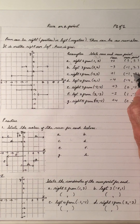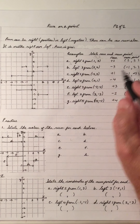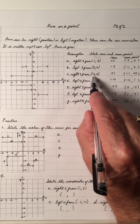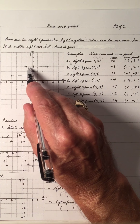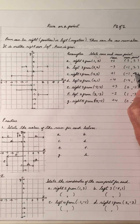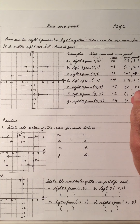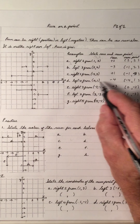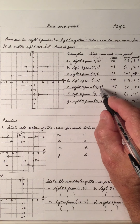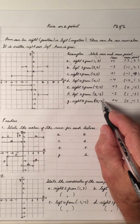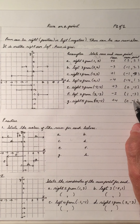That should be a three — I made a mistake. So checking it out: three, three; one, one; negative two, negative two. The y has not changed. Notice the y didn't change.